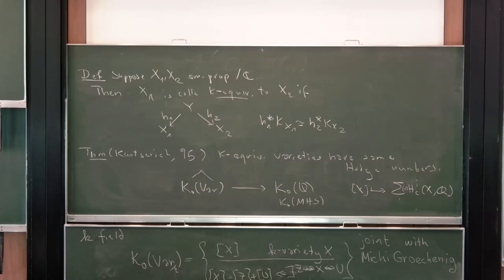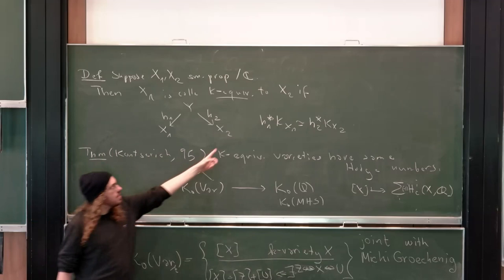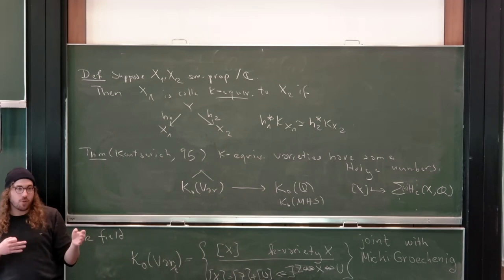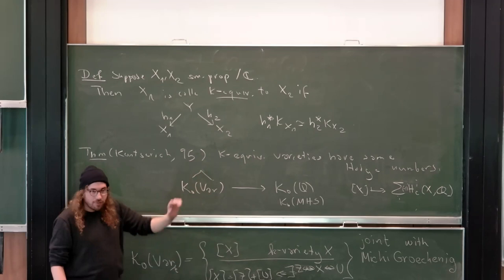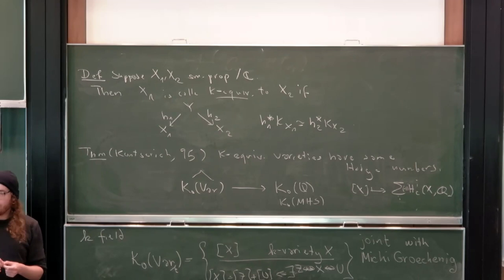The reason K̄₀ is interesting is that many other maps factor out of it. Kontsevich's proof works for all varieties with trivial canonical bundles — that condition is trivially satisfied — so you get the result that two Calabi-Yau varieties which are birational must have the same Hodge numbers, or the same values for any invariant factoring through this construction.